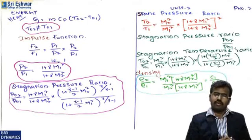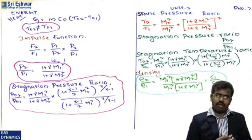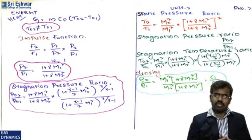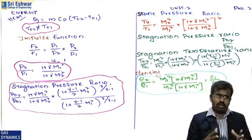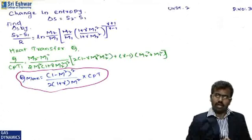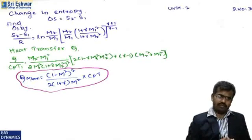The impulse function ratio F2/F1 gives the ratio of impulse at section 1 to section 2. Similarly, formulas are provided for the pressure ratio p2/p1, stagnation pressure ratio p₀2/p₀1, static temperature ratio T2/T1, and stagnation pressure ratio p₀2/p₀1. The entropy change formula is: (S2 − S1)/R = ln[ (M2/M1) × ((1 + γM1²)/(1 + γM2²))^((γ+1)/(γ−1)) ].